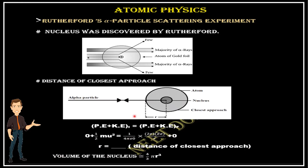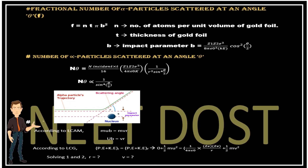If they ask to find the volume of the nucleus, we simply use (4/3)πr³ — this will be an approximation, not exact. We find r based on the relation: potential energy plus kinetic energy initial equals potential energy plus kinetic energy final. Finally, the volume of the nucleus is approximately (4/3)πr³.